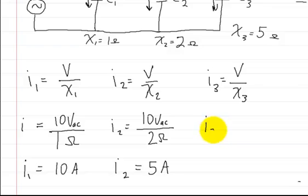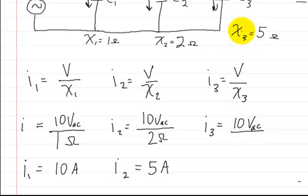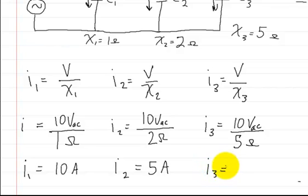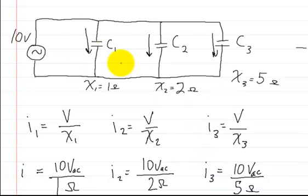So the second current is going to be equal to 5 amps. For the third and last one, we do the same thing: 10 volts AC divided by the reactive capacitance of the third capacitor, which is 5 ohms. So the current in the third branch is equal to 2 amps. That's how you would solve that — it's pretty much the exact same thing as if they were resistors. That's how you do it when they're in parallel.